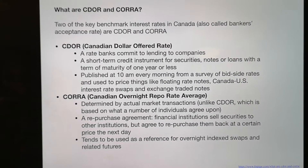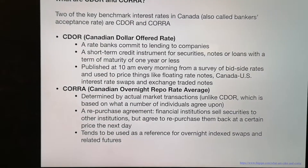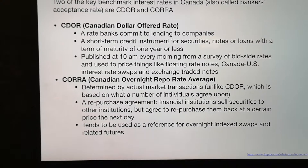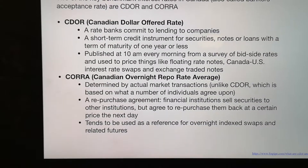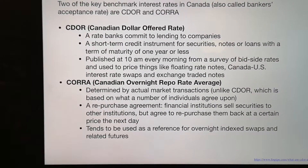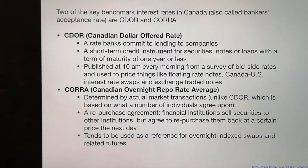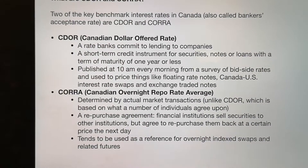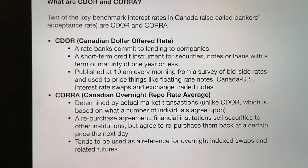It's also called Banker's Acceptance Rate. CDOR, Canadian Dollar Offered Rate, is a rate banks commit to lend to companies. It's a short-term credit instrument for securities, notes, or loans with a term of maturity of one year or less. Usually, it's published at about 10 a.m. every morning. It's from a survey of bid-assigned rates and used for pricing like floating rate notes, Canada-U.S. interest rate swaps, and exchange traded notes.